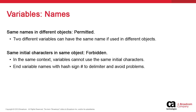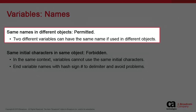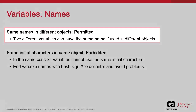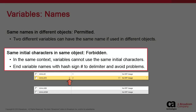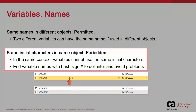Unless there are system-wide variables, variables are specific to their context — in other words, the objects where they are used. You can have two variables with the exact same name, so long as they are used in different objects. One of the best practices for variables is the use of the hash symbol at the end of the variable name. This is used as a delimiter because AA is unable to differentiate two variables with the same starting letters. So we use hash to signal the end of the variable name. In our example, the top situation is forbidden because the first letters of the variables are the same. The use of the hash delimiter at the end allows AA to differentiate the two variables.